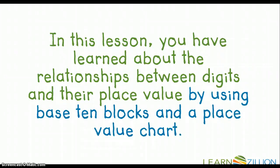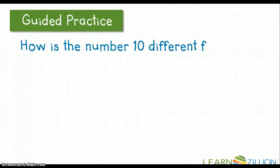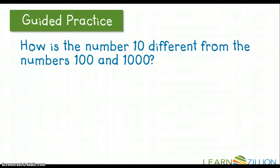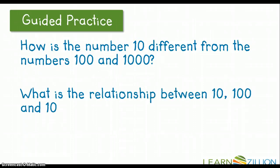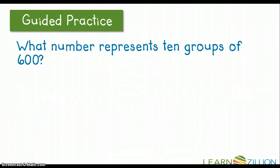In this lesson, you have learned about the relationships between digits and their place value by using base 10 blocks and a place value chart. Let's take a look at some guided practice. How is the number 10 different from the numbers 100 and 1,000? What is the relationship between 10, 100, and 100,000? And one more question: what number represents 10 groups of 600? If you get lost or still don't understand, be sure to go back and review what you learned in this video.